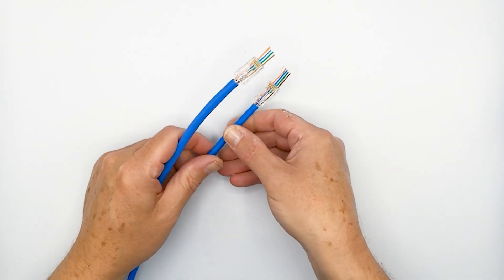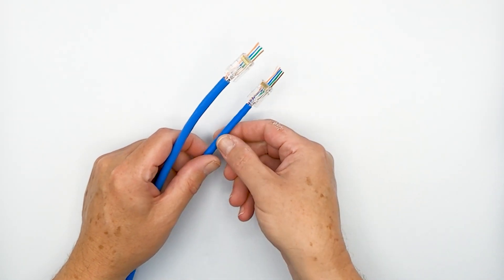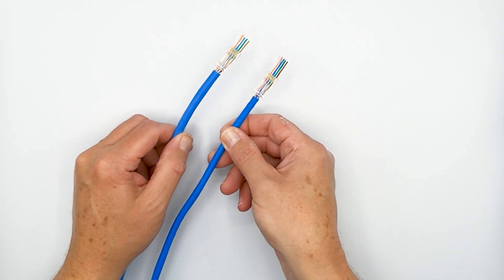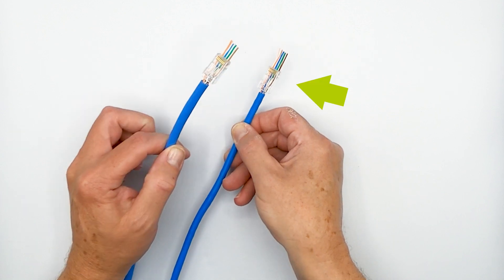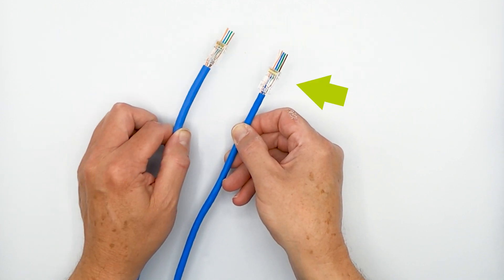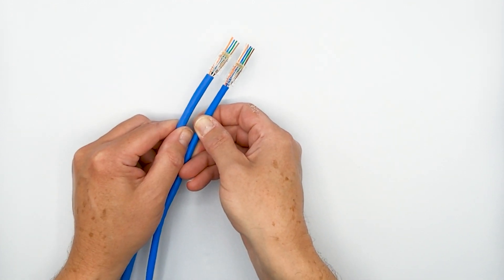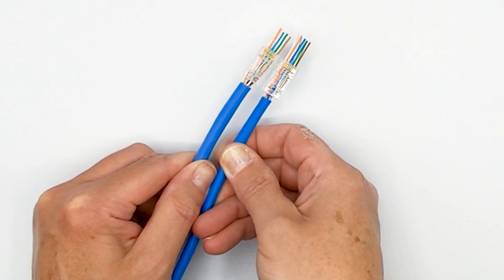Okay, so we've got both cables that are ready to be terminated with RJ45s. This is the Category 6 riser and this is the Category 6A riser. As you can see, there is a significant difference, especially when you line them up like that.